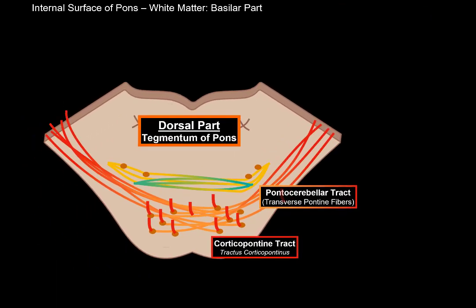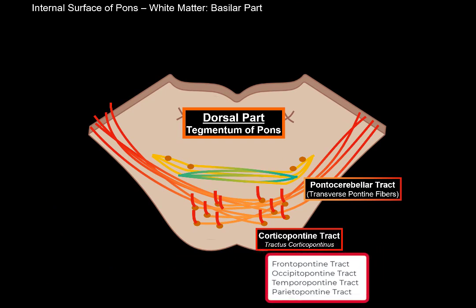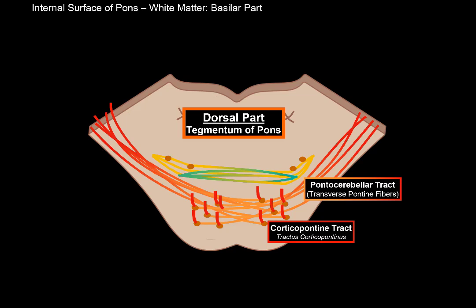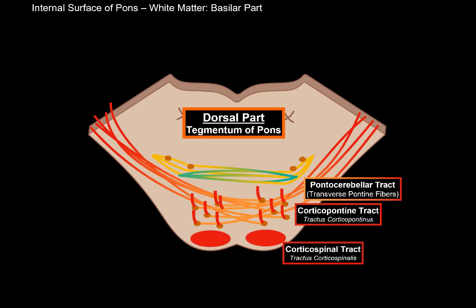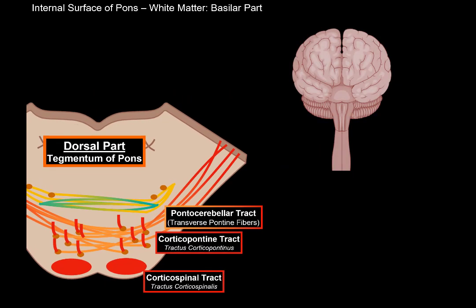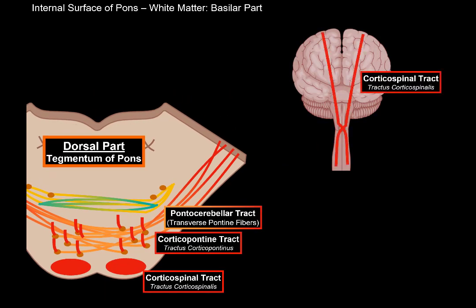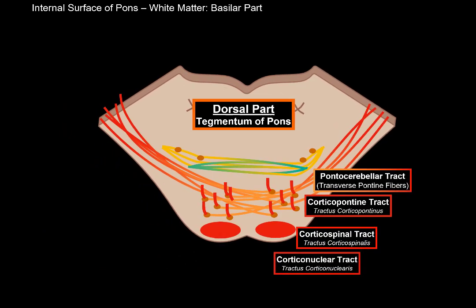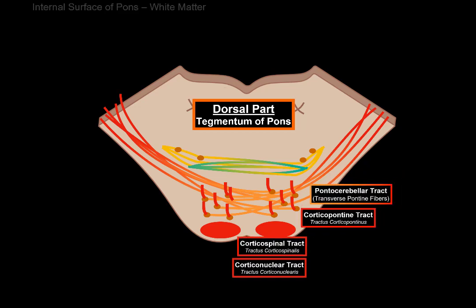The corticopontine tract includes the frontopontine, occipitopontine, temporopontine, and parietopontine tracts — all synapsing with the pontine nuclei. The other descending tract is the corticospinal tract, a pyramidal tract originating from the pyramidal cells of the primary motor area and descending to the spinal cord to innervate skeletal muscles. Alongside it, you'll find the corticonuclear tracts, responsible for voluntary control of muscles in the head and neck.